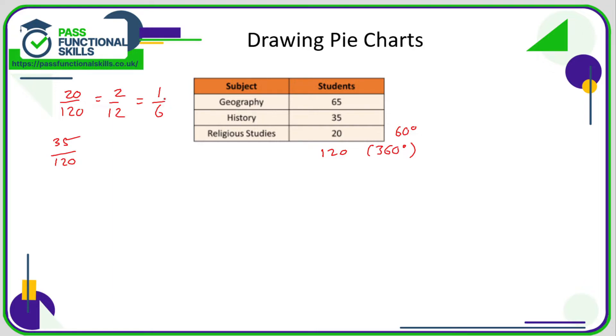What we can do, instead of going back to the previous one, one-sixth is the same as 2/12, is the same as 20/120. We worked out what one-sixth of 360 was, but we could have worked out what 2/12 of 360 was.